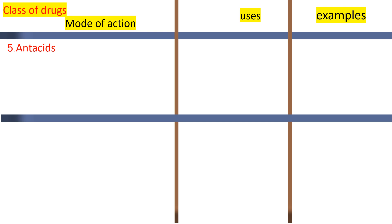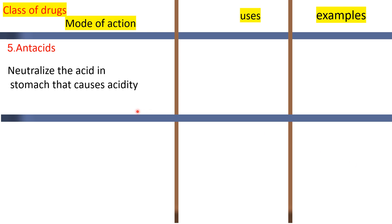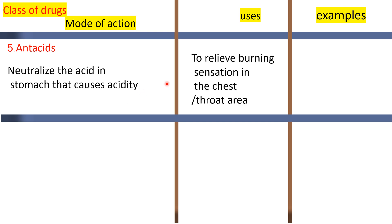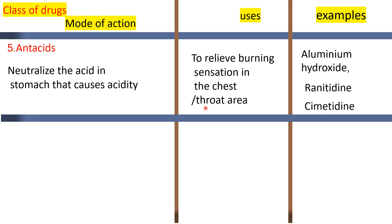Antacids — there are more tissues in the stomach that can cause extra acid to be produced. Antacids are used to relieve the burning sensation in the chest and throat area caused by excess acidity. Examples include aluminium hydroxide, ranitidine, cimetidine, and milk of magnesium.